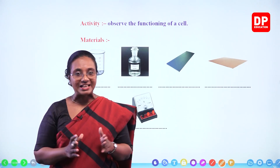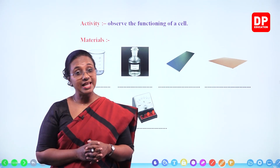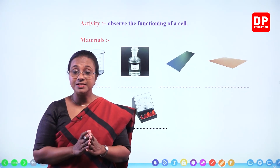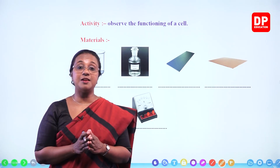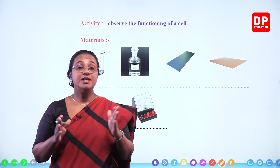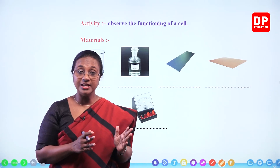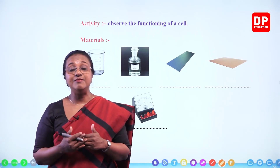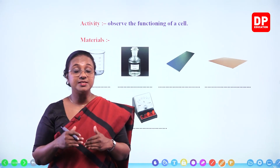Hello, my dear students, welcome to today's lesson. I'm going to continue with the lesson on Electrochemistry. In the first chapter, we discussed what happens when we put a piece of zinc metal sheet into dilute sulfuric acid. The zinc plate dissolves because zinc solid becomes Zn²⁺ ions, and the Zn²⁺ ions leave electrons on the zinc plate and go into the solution.